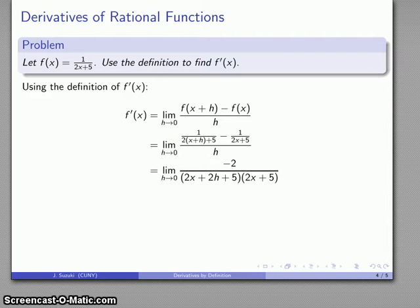And so after all the dust settles, my difference quotient simplifies to this expression. And now I have to think about this as h gets close to zero, minus 2 gets close to minus 2. 2x + 5 gets close to 2x + 5.